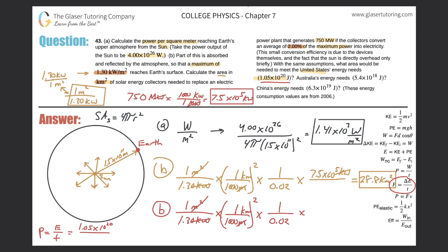Let's do the conversion to seconds. A year on the bottom, day on the top: 365 days in a year; day on the bottom, hour on the top: 24 hours in a day; then hour to seconds: 3,600 seconds in an hour. So 365 times 24 times 3,600 gives a value of 3.15 times 10 raised to the 7 seconds.